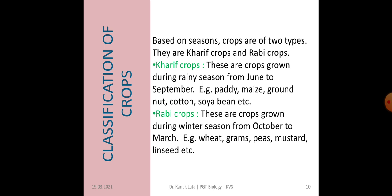Their sowing season is June and harvesting season is September. Now next is the Rabi crop. These are grown during the winter season, that is from October to March. Sowing is done during October and harvesting is done in March. For example: wheat, grams, peas, mustard, linseeds, etc.